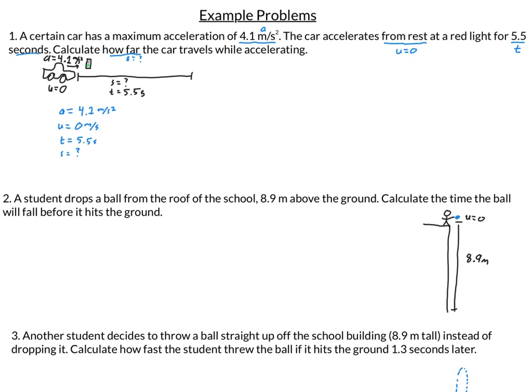Looking at my variable bank, I have an acceleration problem and it doesn't have final velocity, meaning my position kinematic is perfect to use here. Let's rewrite the equation and substitute in. S is what I'm looking for. u is zero times t of 5.5 plus one-half the acceleration, 4.1, times my time squared, 5.5 squared.